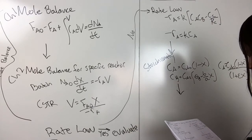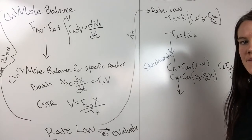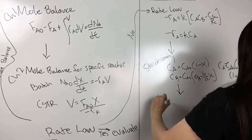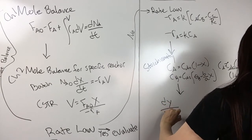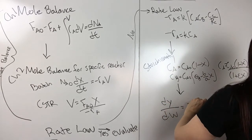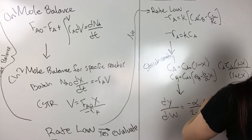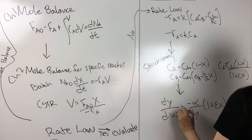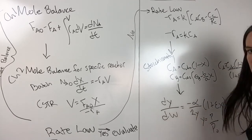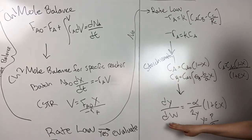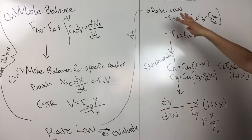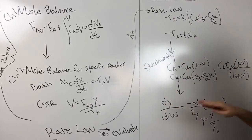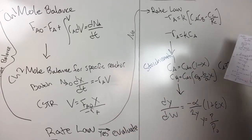And, so that ends up looking like this. DY over DW equals minus alpha over 2Y 1 plus epsilon X. And then this Y is equal to P over P naught. And then at this point you would combine all of these equations. And so if you have the pressure drop, you would then combine all these equations. So your mole balance, rate law, stoichiometry, and the equation for the pressure drop.